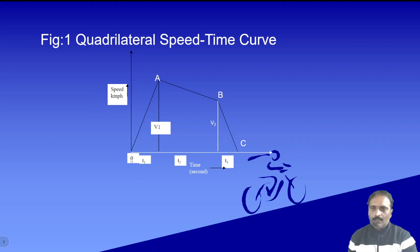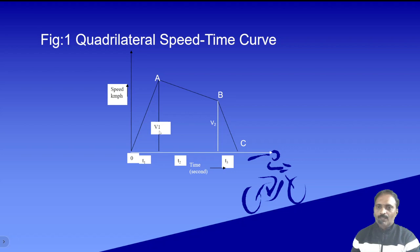The maximum speed is v1, and the time taken for that is t1. So alpha, the acceleration, is given as v1 divided by t1, or you can write the equation for t1 as equal to v1 by alpha. Alpha is the acceleration represented in kilometers per hour per second (kmph/s). Considering the journey from A to B, at A the speed is v1.